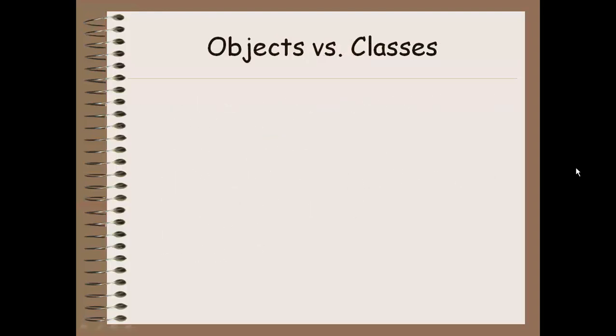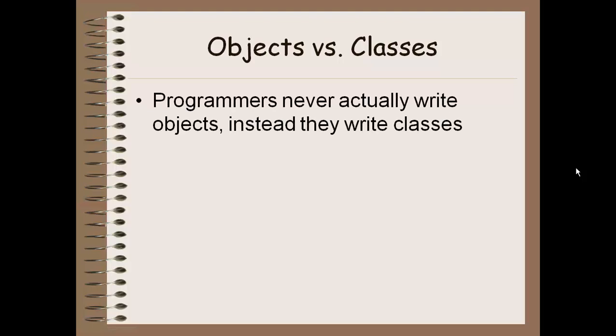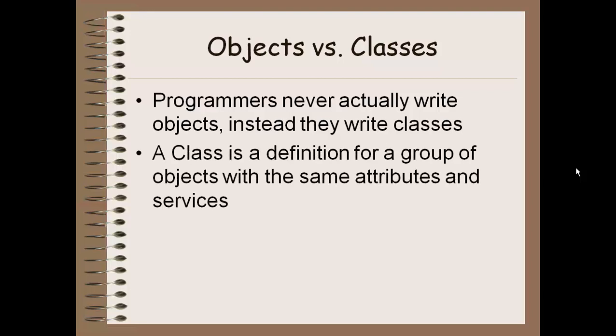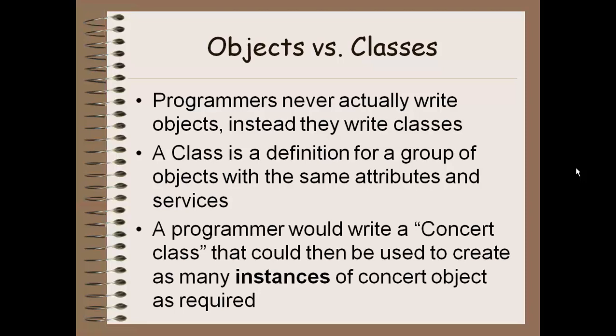Now, we're talking about all these objects; however, we don't actually work with objects in our programming world — we never code an object directly. Instead, what we program or create code for is called a class. A class is basically a definition for a group of objects with the same attributes and services. So I might make a class for a concert, and then I can have a bunch of different concert objects — a Justin Bieber concert, a U2 concert, a Jay-Z concert. Each of those concerts is going to have the same attributes and the same services. Each of those individual objects is called an instance of that class.